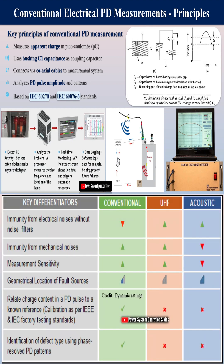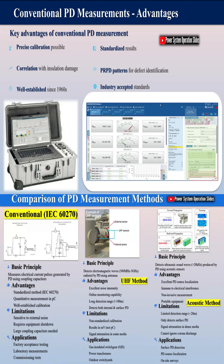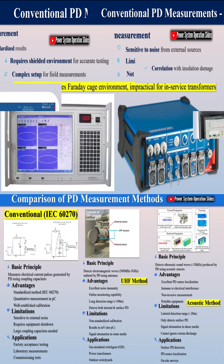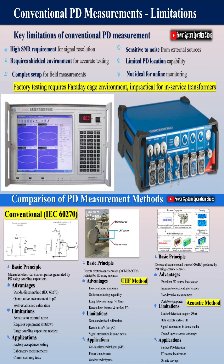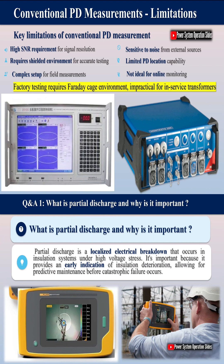In power transformers, PD can originate from various sources including voids in solid insulation, gas bubbles in oil, floating components, surface tracking, and contamination. The evolution of PD typically follows a pattern of increasing intensity and frequency as the insulation condition deteriorates, eventually leading to complete breakdown if left unaddressed. Understanding the nature and characteristics of PD is fundamental to implementing effective monitoring strategies and interpreting measurement results accurately.